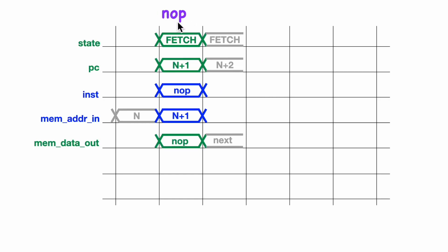Now I want to take a look at the NOOP instruction. It sends the current value of the program counter to the memory unit so that on the next cycle we'll be fetching the opcode of the instruction that follows the NOOP instruction, and it increments the program counter and remains in the fetch state. These are just exactly our defaults, so its implementation is pretty trivial. In this state, the program counter will be the address of the byte following the opcode byte.